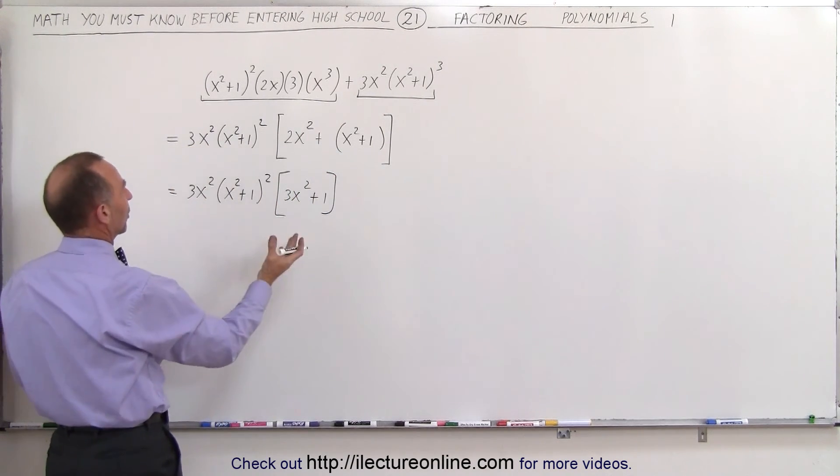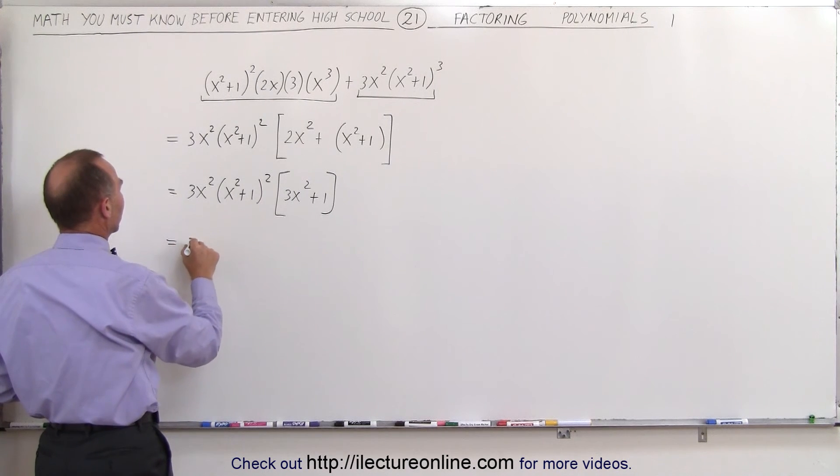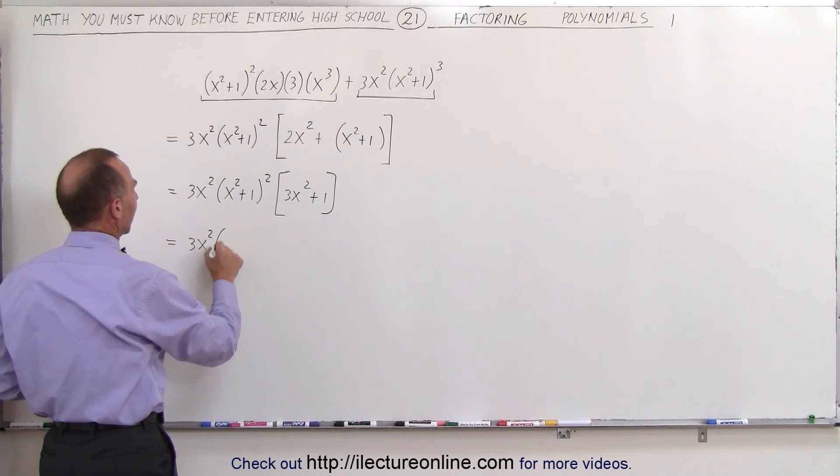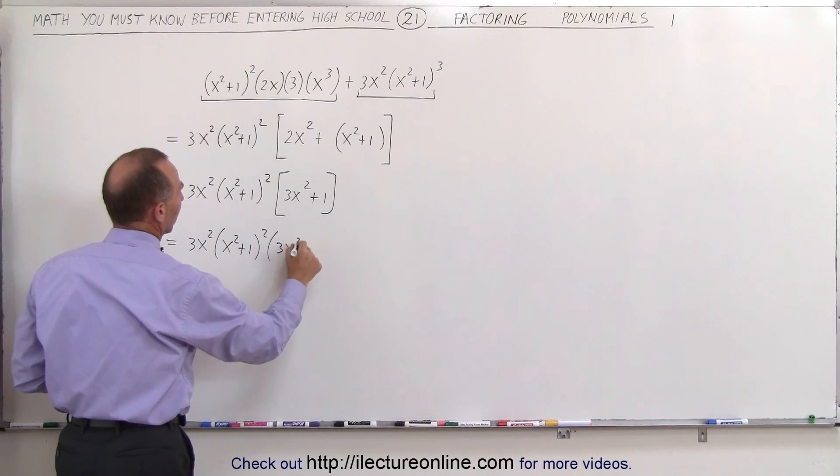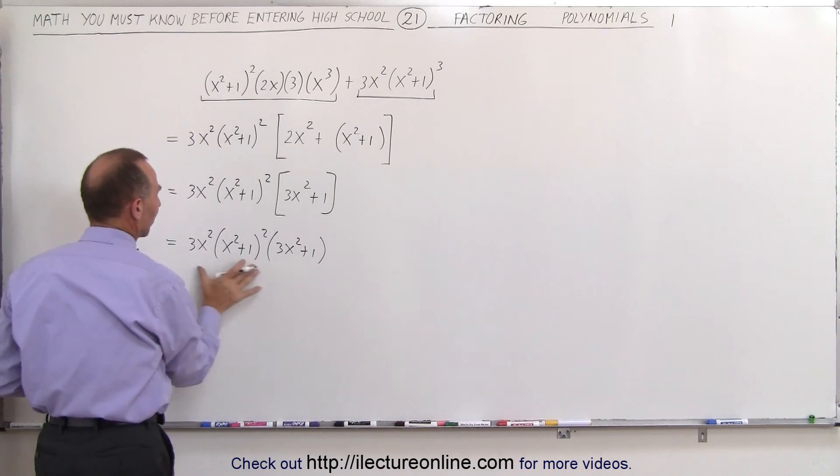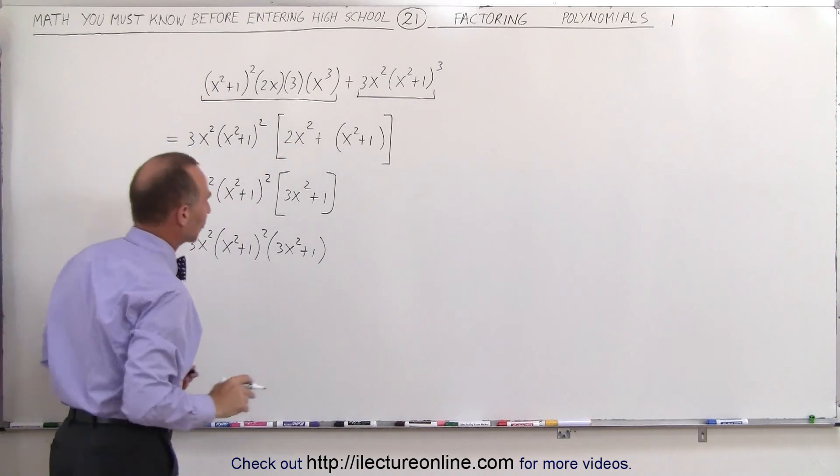And instead of brackets we could write parentheses, so the final answer we could say that this is 3x squared times the quantity x squared plus 1 squared times the quantity 3x squared plus 1. And that's the simplified form of this expression right here.